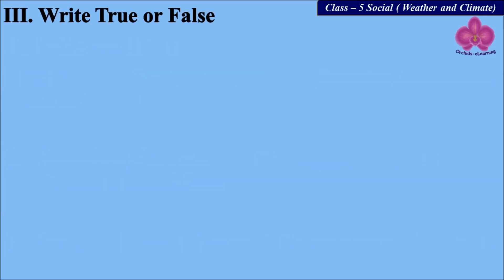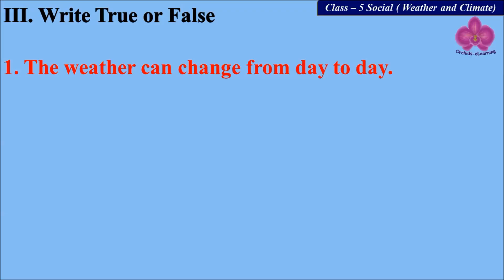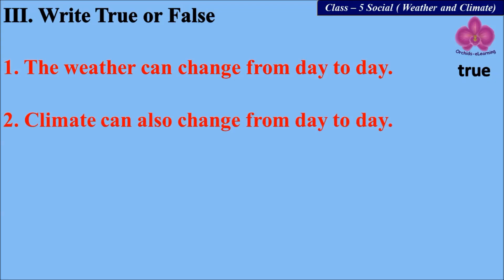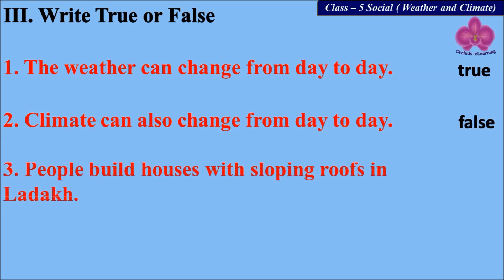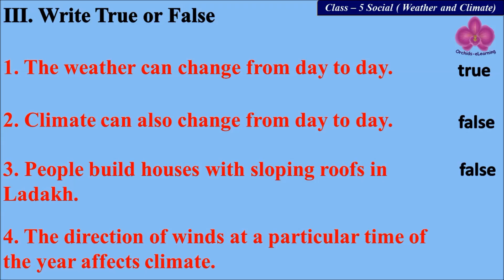Next: write whether the following statements are true or false. Number one: the weather can change from day to day — true. Number two: climate can also change from day to day — false. Number three: people build houses with sloping roofs in Ladakh — false. Number four: the direction of winds at a particular time of the year affects climate — true.